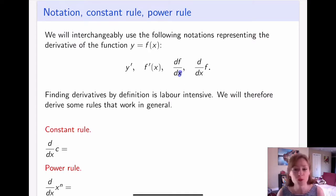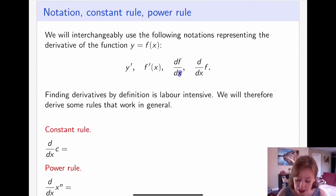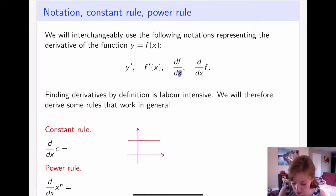Let's take the simplest possible function we can think of, which is a constant function. What if my function is just y equals 7? No matter what value for x I pick, y is always 7. Let's think about that as a graph — what does y equals 7 look like? Well, y equals 7 is a line, and in fact it's a horizontal line.